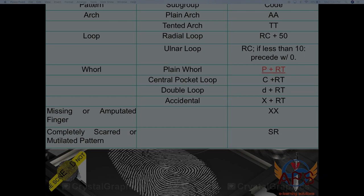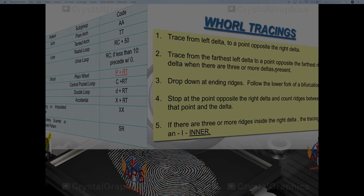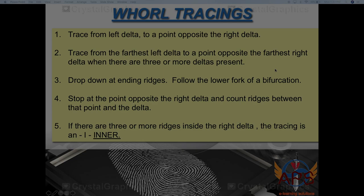Let's have a short review of ridge tracing. Tracings are applied for whorls. We trace from the left delta to the right delta — always starting from the left going to the extreme right delta if there are more than two deltas. We trace from the farthest left delta to a point opposite the furthest right delta. If there are ridge endings, we drop down to the next ridge, and if followed by a bifurcation, we choose the lower fork and stop at the point opposite to the right delta.